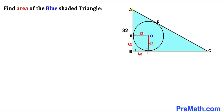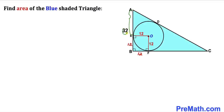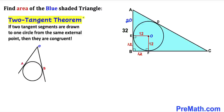Now we can see that the whole length AB is 32 units and side length EB is 12 units. So side length AE is going to be 32 minus 12, which gives us 20 units. Now let's recall the two tangent theorem: if two tangent segments are drawn to one circle from the same external point, they are congruent. Therefore tangent AE and tangent AD are congruent — if AE is 20 units, then AD is 20 units as well.